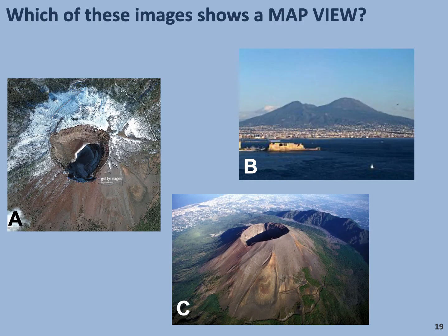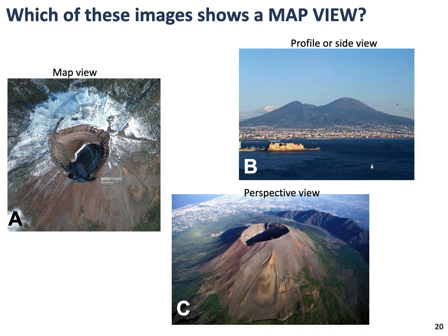Let's look at something geological rather than cupcakes. This is a volcano in Japan called Sakurajima, and I've got three images for you. Which image — A, B, or C — shows a map view? Pause the video while you make your choice and play it again to see the answer. If you chose A, you're right. B is similar to a cross section diagram, but it's a photo right from the side — usually called a profile or side view, but very similar. C would be the perspective view.